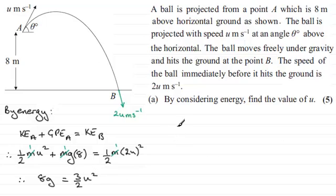So that means then that to get u squared, all I need to do is times both sides by 2 and divide by 3. So u squared equals 8g times 2, which is 16g. And then that's divided by 3. So to get u, you just need to take the square root of 16g over 3.